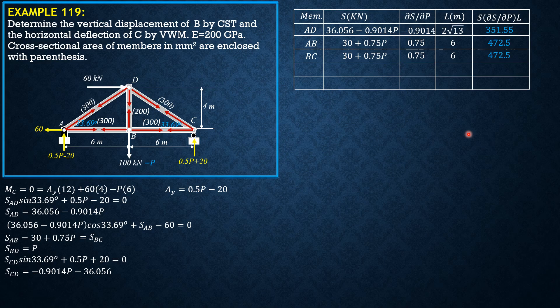Then for member CD it is negative 0.9014P minus 36.056. Partial derivative negative 0.9014, then the length is 2 square root of 13. Then the product: negative 0.9014 of 100 minus 36.056 times negative 0.9014 times 2 square root of 13, that's 820.29.